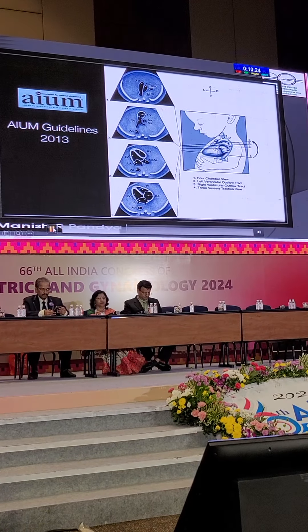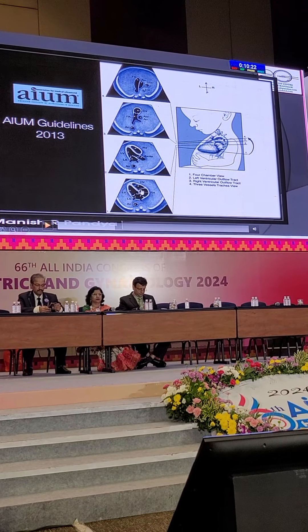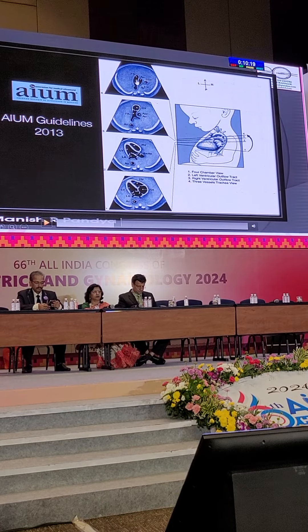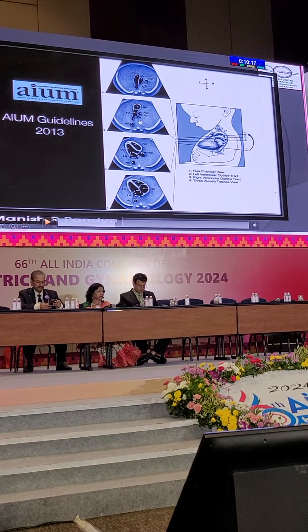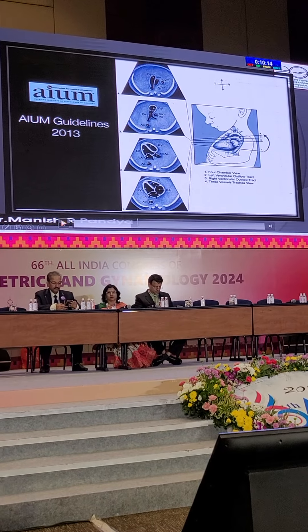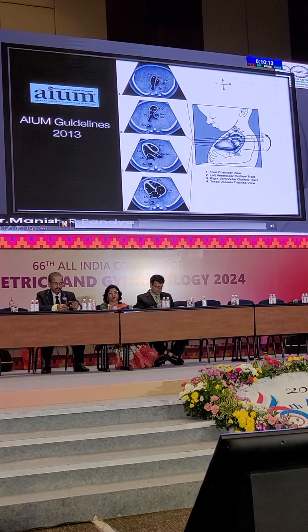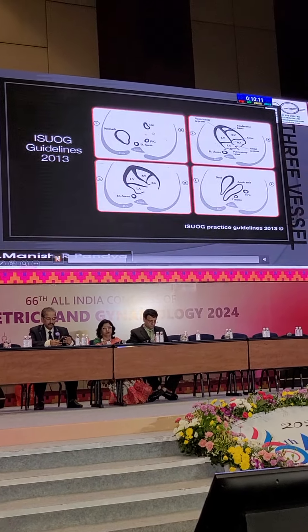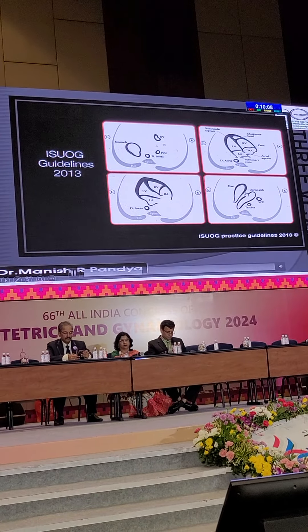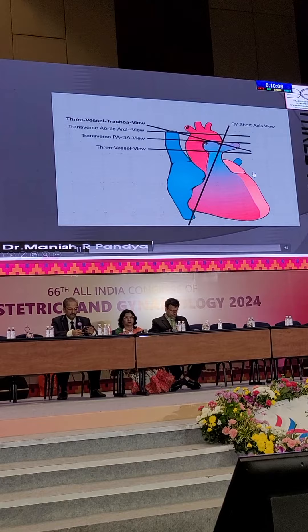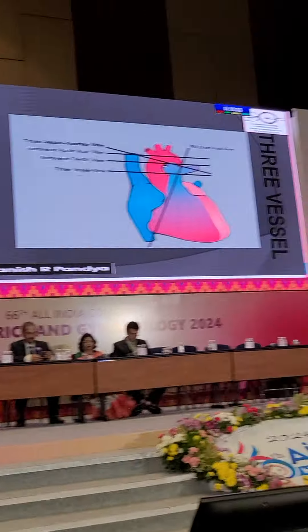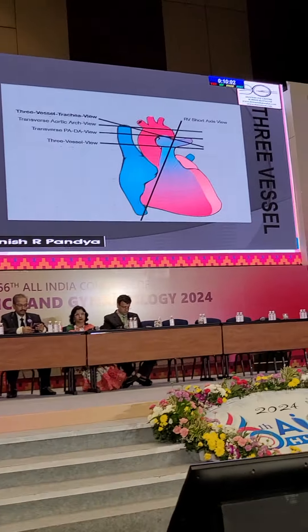The AIUM guideline states: examine the four-chamber view, then LVOT, then RVOT, and ultimately go for the three-vessel trachea view. However, I am bypassing LVOT and RVOT — just go from four-chamber view directly to the three-vessel trachea view. From four-chamber directly to three-vessel trachea view, you can find almost 96% of the anomalies that you can name in congenital heart disease.